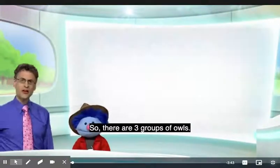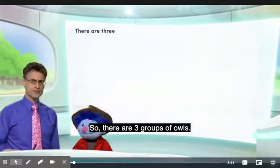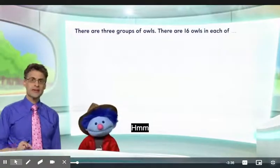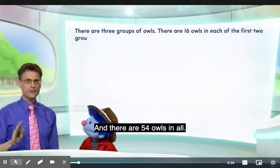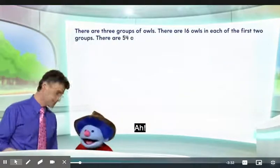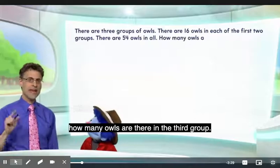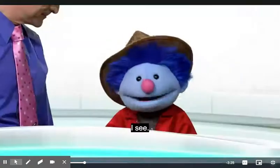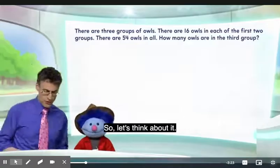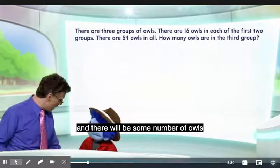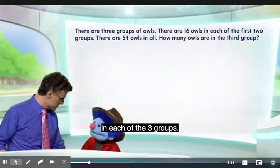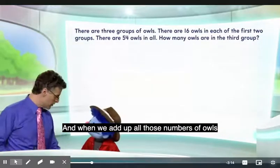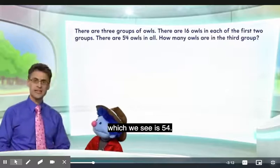Let's try the question first. Okay, here we go. There are three groups of owls. There are 16 owls in each of the first two groups, and there are 54 owls in all. The question for us is to figure out how many owls are there in the third group. That's the mystery. We have three groups and when we add up all those numbers of owls, we're going to get the total, which is 54.